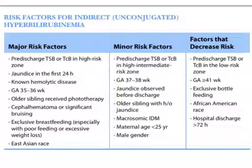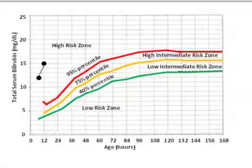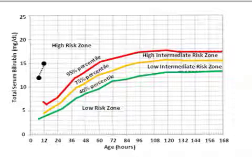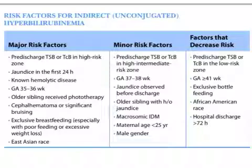The minor risk factors are: pre-discharge TSB or TCB in the high intermediate zone — above the 75th percentile. Gestational age of 37 to 38 weeks. Jaundice observed before discharge. Older sibling with a history of jaundice. Macrosomic infant of a diabetic mother (IDM). Maternal age less than 25 years. And male gender.